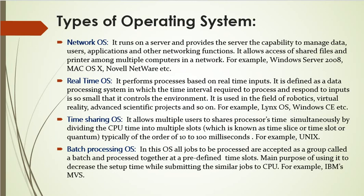Next is the network operating system, which runs on a server and provides the server the capability to manage data, users, groups, security, applications, and other networking functions. The primary purpose of this OS is to allow shared file and printer access among multiple computers in a network — typically a local area network or other private networks. Examples are Windows Server 2008, Mac OS, and Novell Network. Next is the real-time operating system.